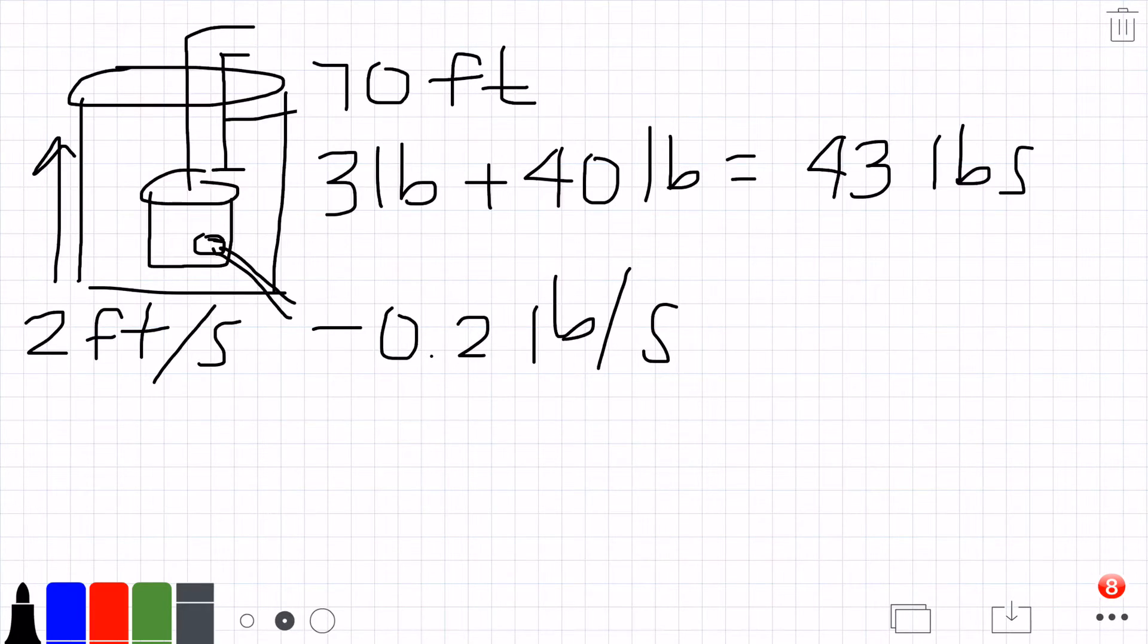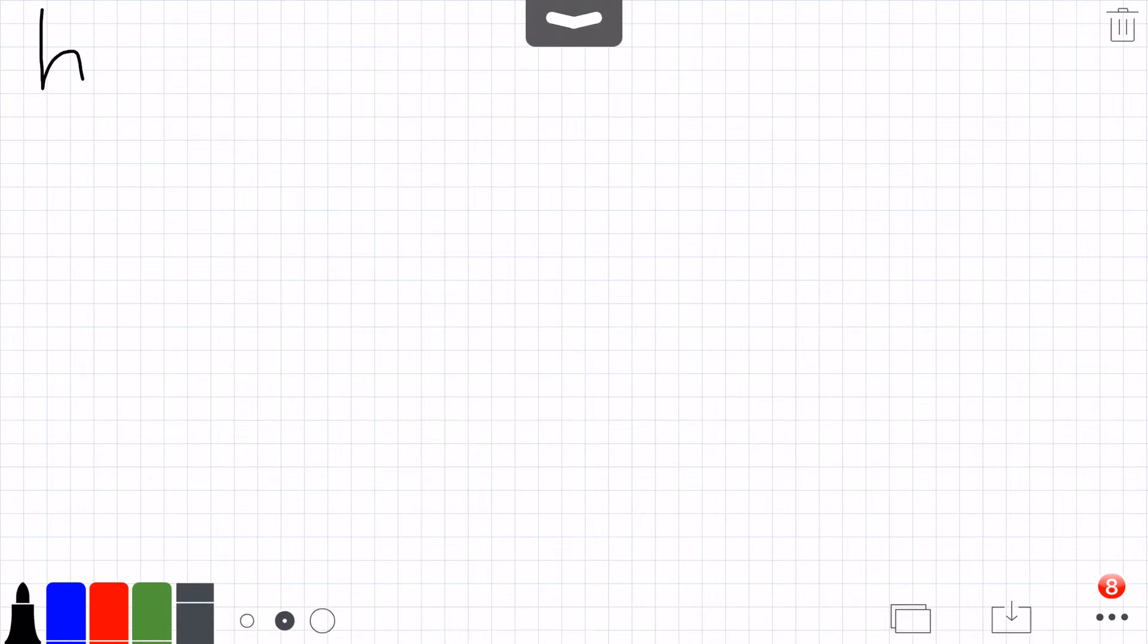If we want to find the work done, we need to find weight as a function of height. We have a height of 70, a weight of 43, and a constant velocity of 2.